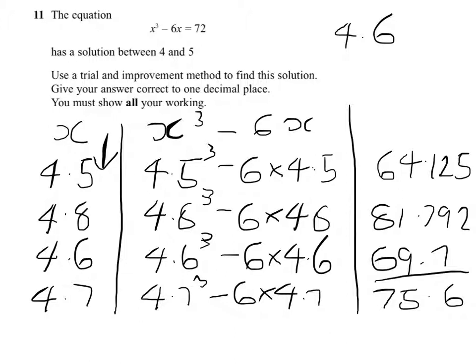Whereas if you look at 4.7, which was larger, the gap there is about 3.6, so it's 4.6 that gets us closest to one decimal place.